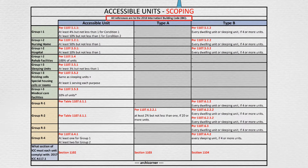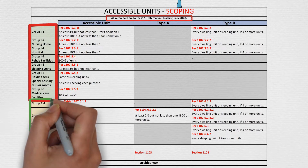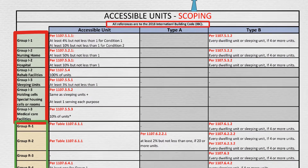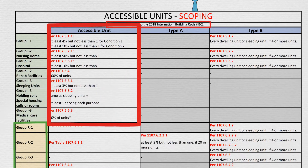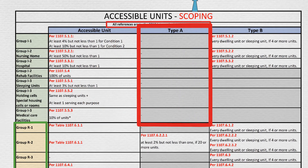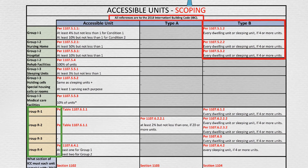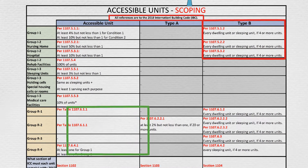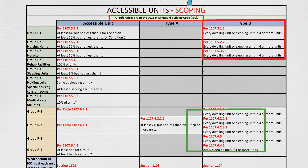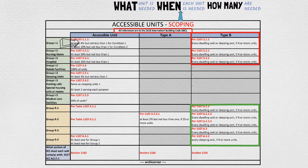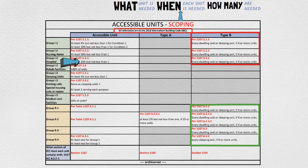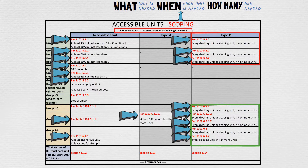First, accessibility is required in I and R occupancies. In R occupancies, you will notice that units are required to meet requirements for accessible units; Type A units are not even mentioned, and Type B units are required only if there are four or more units. In R-2 occupancies, accessible units are required; Type A units are required when there are more than 20 units present; and Type B units are required when there are more than four units present. In many instances, the number of units required is determined by the percentage of units present, but that is not always the case — each occupancy group specifies how many units are needed.